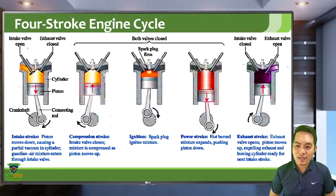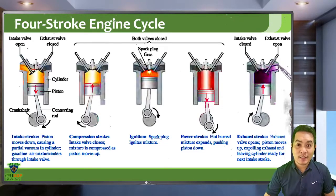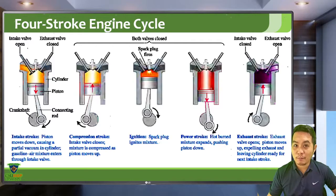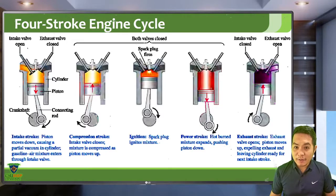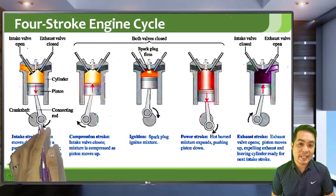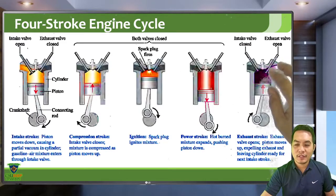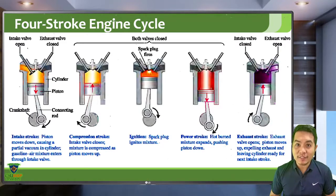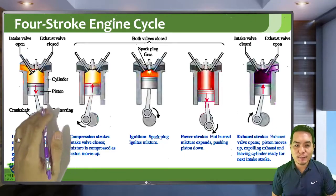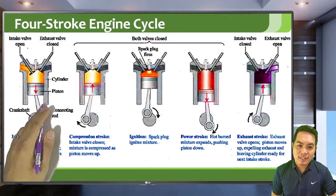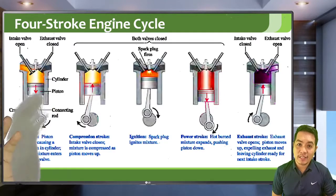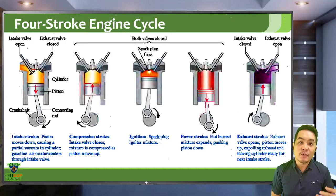During the exhaust stroke, the gas is compressed by the piston as the exhaust valve opens. The exhaust smoke travels to your muffler pipe, and then the cycle repeats from the intake stroke. After exhausting all the burnt air and fuel mixture, the engine takes in fresh new air and fuel mixture.